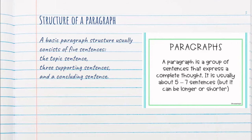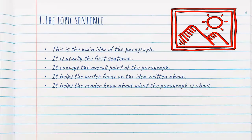The structure of a paragraph is divided into three parts: topic sentence, supporting sentence, and concluding sentence. A paragraph is a group of sentences that will express a complete thought, and it is usually five to seven sentences, but it can also be longer.